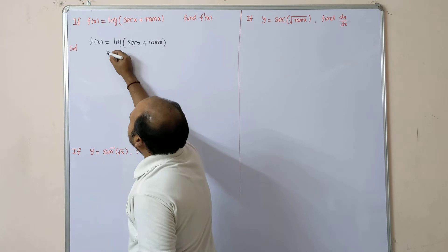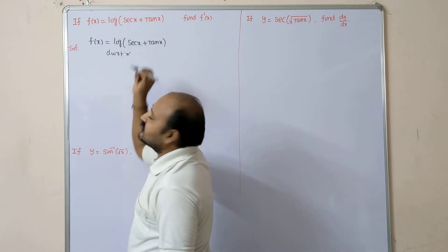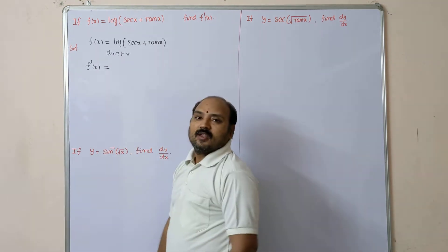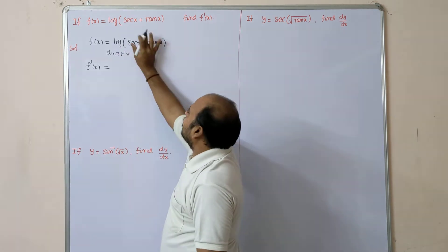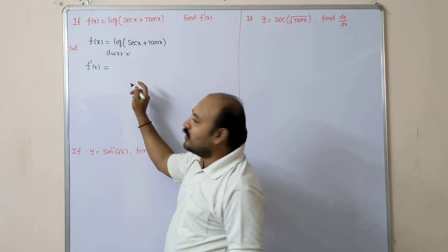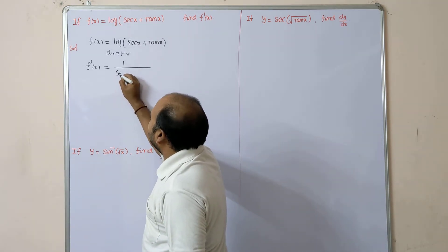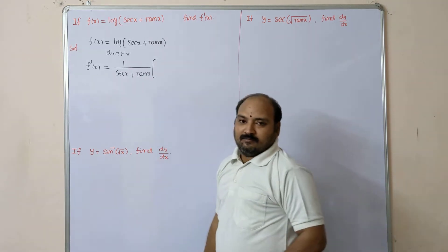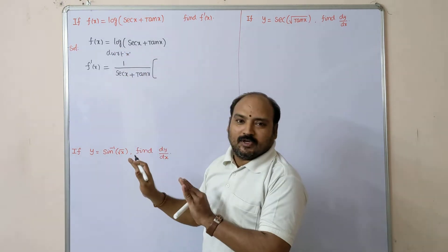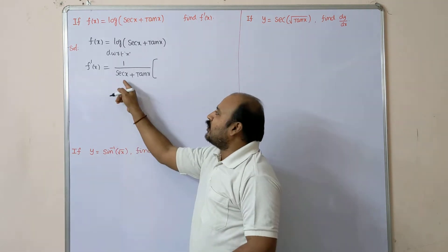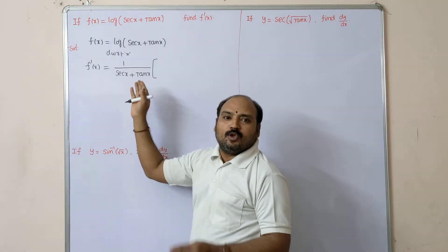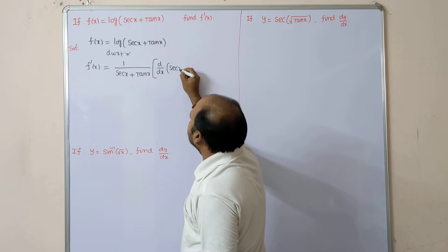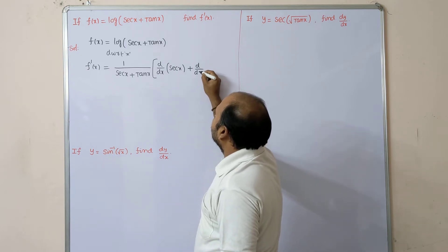So now what we are doing is differentiating with respect to x. f(x) differentiated becomes f'(x). d/dx of log(x) is 1/x, so the value here is 1/(sec x + tan x), multiplied by d/dx of (sec x + tan x). There are two terms, so differentiate both: d/dx of sec x plus d/dx of tan x.